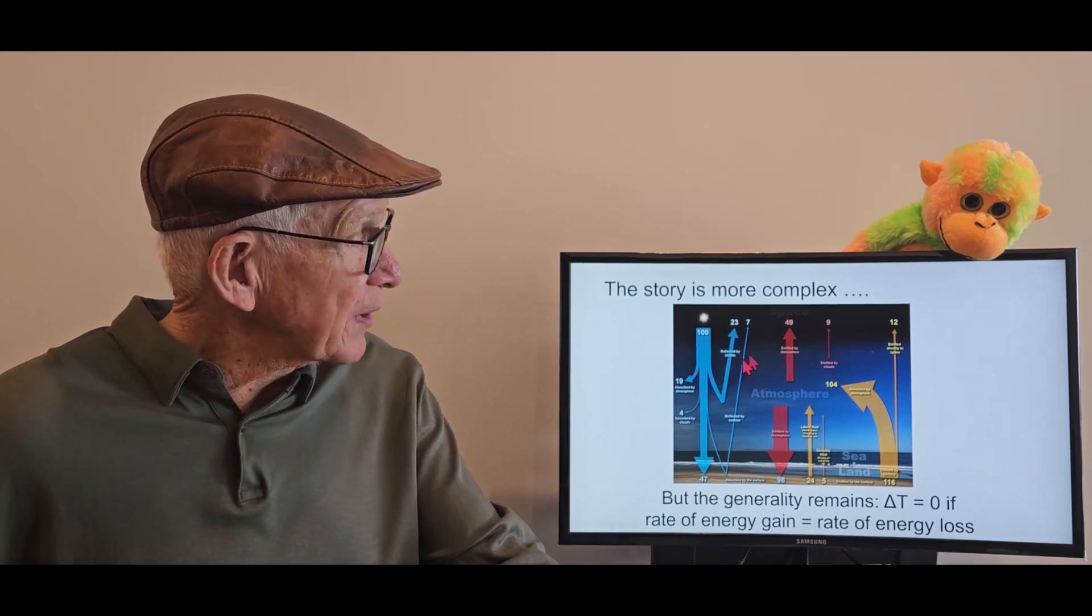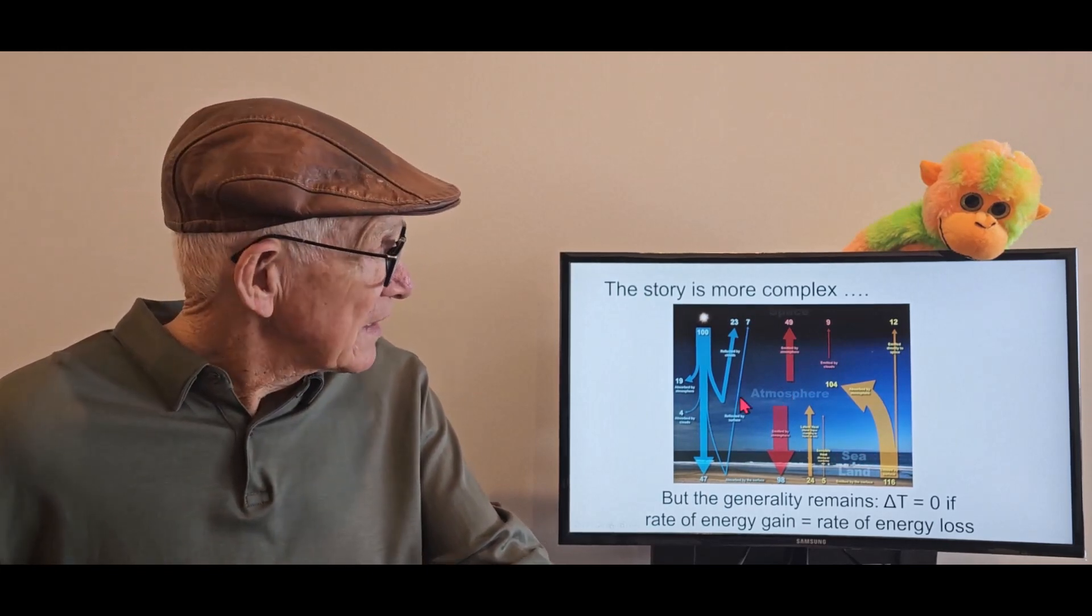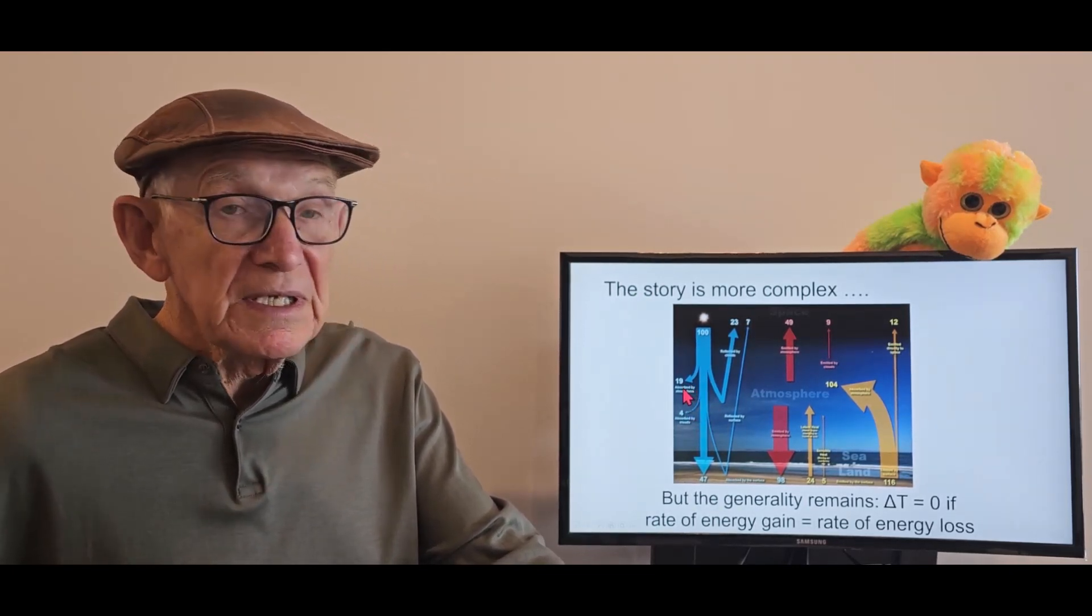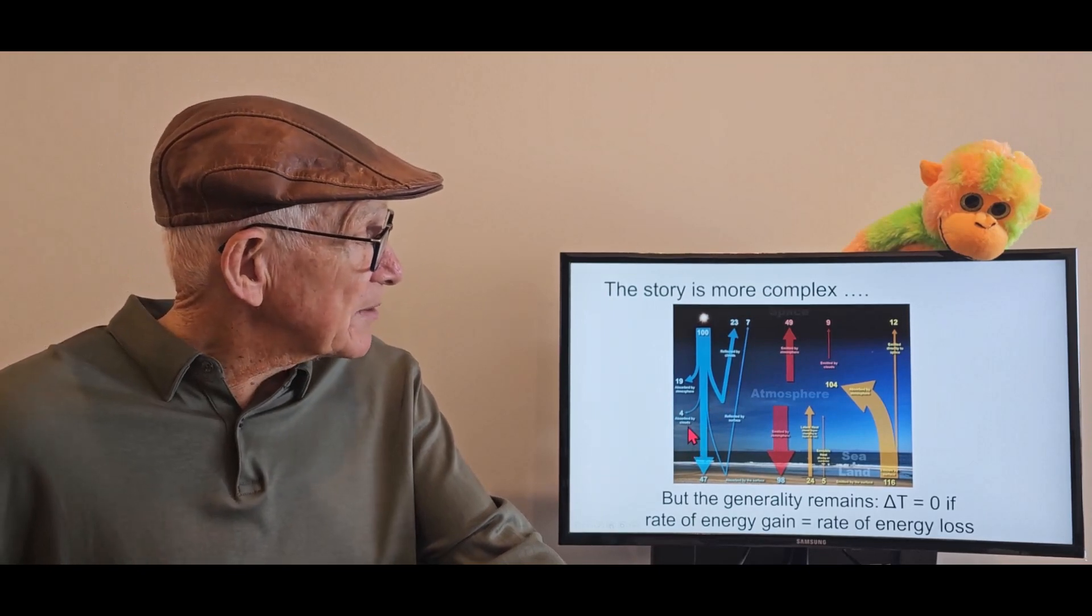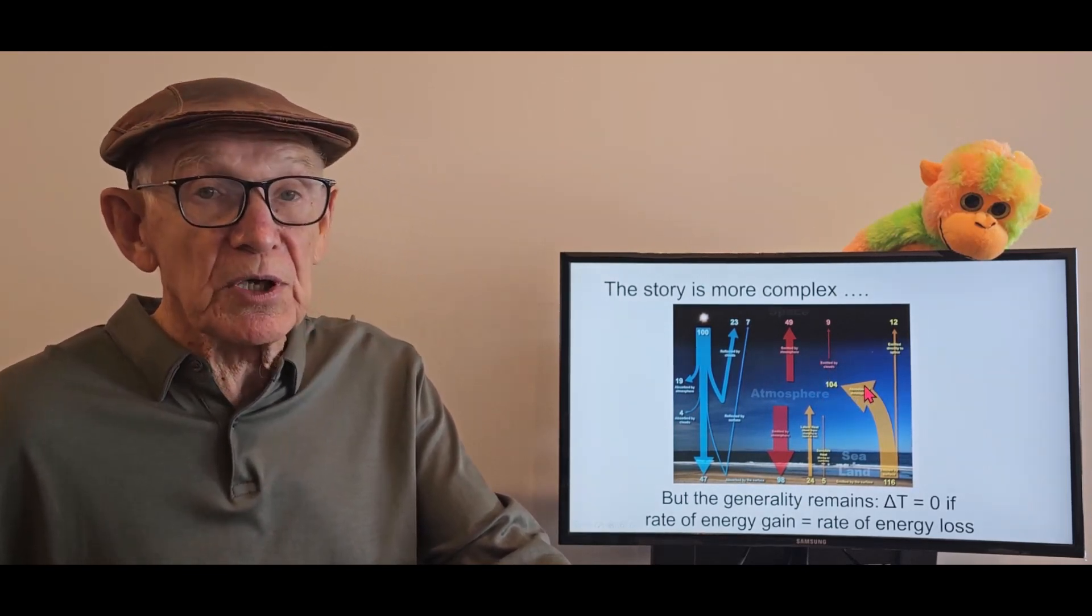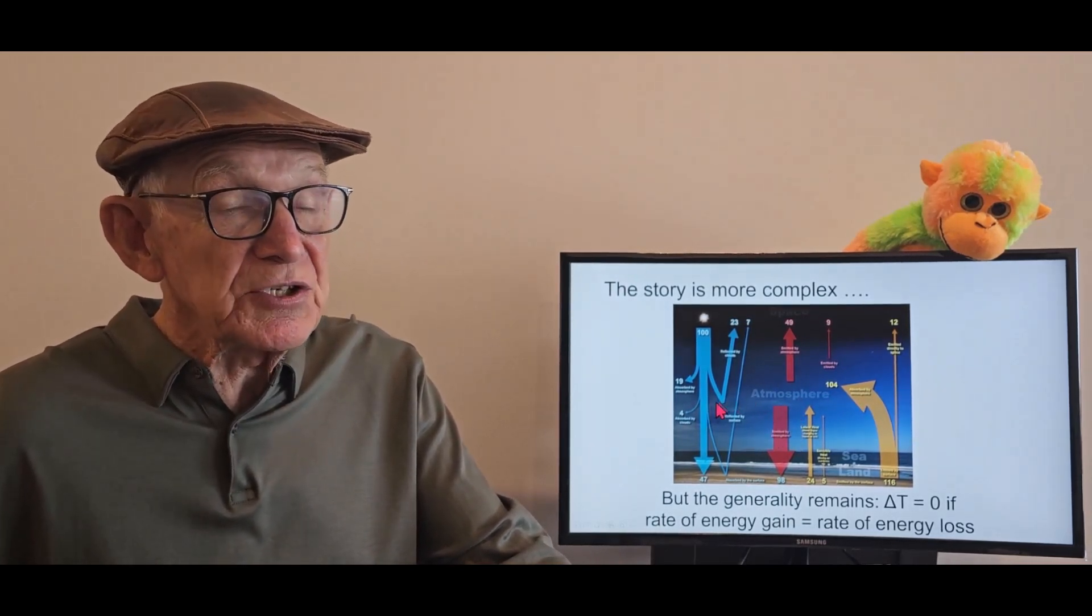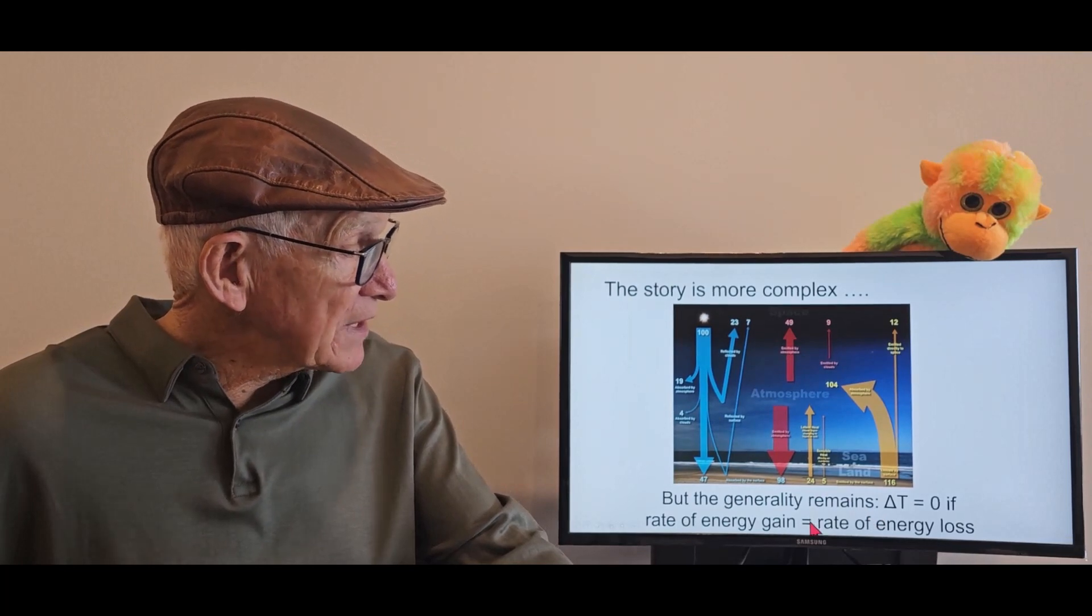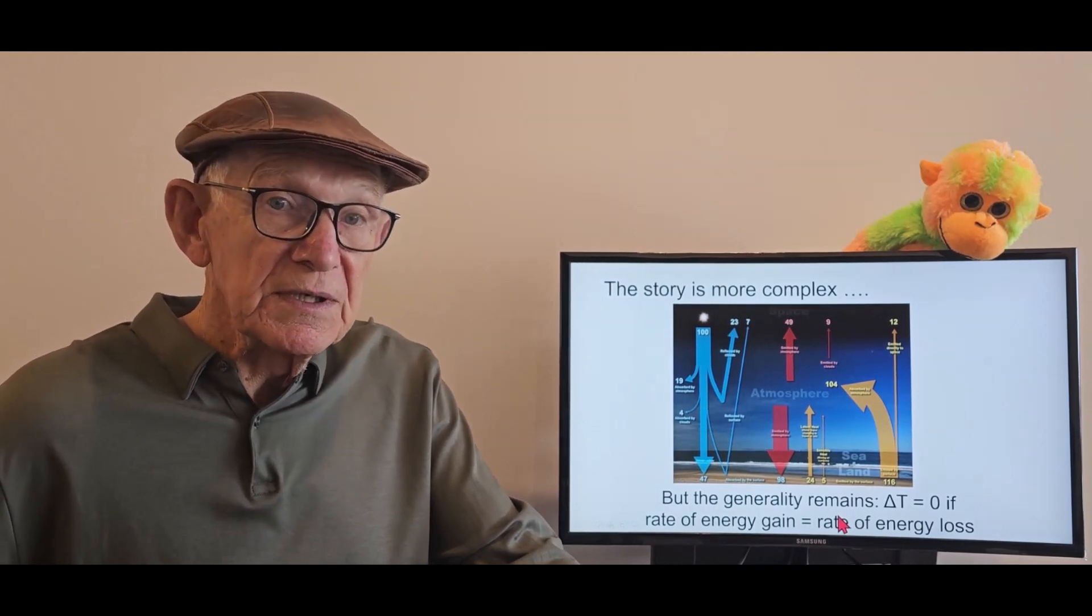Now, the story is a bit more complex in terms of Earth, what reaches Earth and what leaves the surface of the Earth. There are, of the radiations coming down, some of it, not very much, is absorbed by the atmosphere. Some is reflected from the surface, particularly from snow fields. Some is absorbed by clouds. And of that that's being emitted from Earth, some is absorbed by molecules in the atmosphere. Some of those molecules radiate back again. There are many, many pathways for energy flow. But the generality remains. If the energy gained by the surface of the Earth at a given time is the same as the energy loss, and the temperature stays constant.